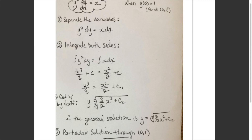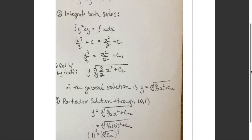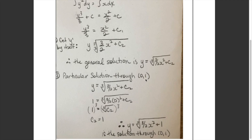Step three — get y by itself. Multiply everything by 3, giving y cubed equals 3x squared over 2 plus c (absorbing the constant). Then take the cube root of both sides: y equals the cube root of (3x squared over 2 plus c). That is the general solution. To find the particular solution, substitute y equals 1 and x equals 0: 1 equals the cube root of c. Cubing both sides gives c equals 1.